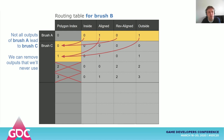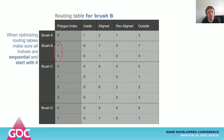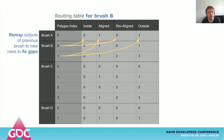Now notice that not all the inputs of brush C are referenced by brush A. This means we can remove all the rows that will never be used. Sometimes when modifying tables you'll end up with indices that don't start with 0 — we'd like all numbers to start at 0 for every brush and for every row to be sequential, otherwise we'd end up with holes in our table. So we go back and change 1 and 3 to 0 and 1.